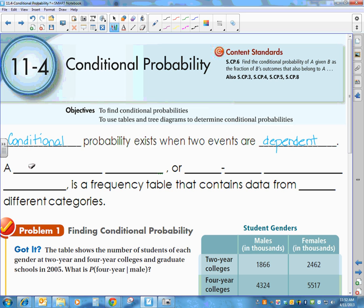Before we get into the formula, we're going to talk about a contingency table, also known as a two-way frequency table. It is a frequency table that contains data from two different categories.